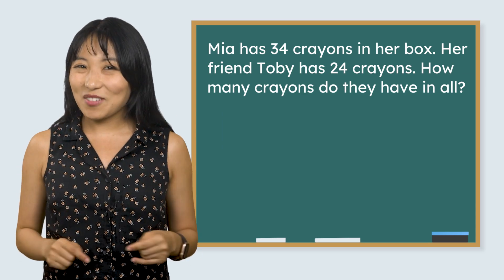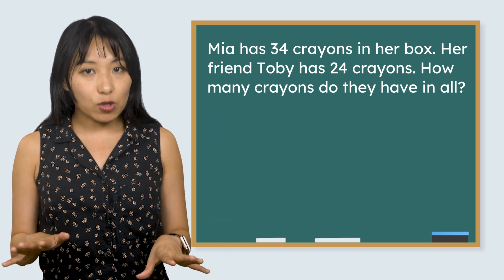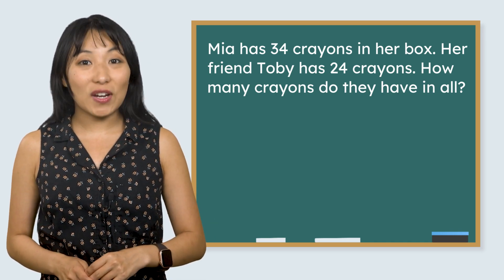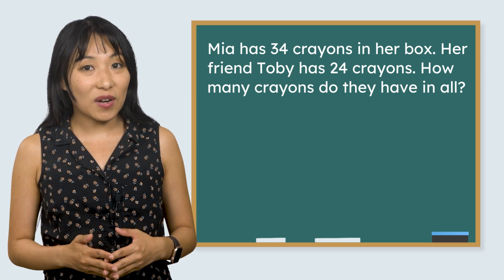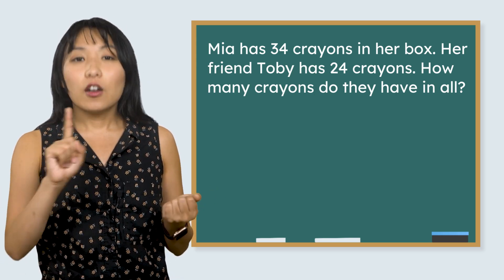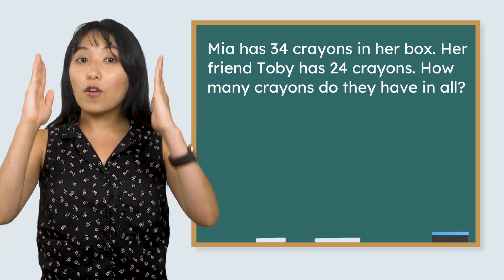Now that we have some practice, I think we're ready to solve Mia's math mystery. Let's reread the number story. Mia has 34 crayons in her box. Her friend Toby has 24 crayons. How many crayons do they have in all? First things first, we need to write this addition problem vertically. Mia has 34 crayons. So we'll write that here. Her friend Toby has 24. So we'll write that number below. Wait a second. That doesn't look right. What do I need to change? Aha! I need to move this number over so that the tens and ones are lined up. There we go. Now we add a plus sign on the side, draw a line below to represent the equal sign, and we're ready to find the answer.